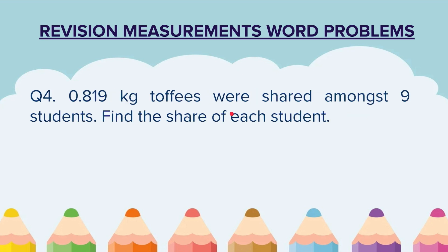Question 4. 0.819 kg of toffees were shared amongst 9 students. Find the share of each student. This is the total amount of toffees shared by 9 students — each one is getting a small portion. You have to find out how much each student gets.